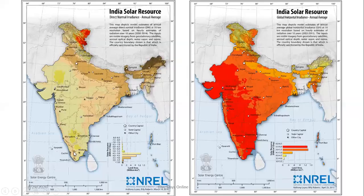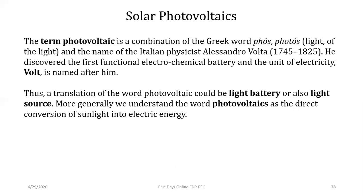India is in the tropical region and has abundant solar energy resources. We can tap solar energy both in the form of light and heat, making both solar thermal and solar photovoltaic systems well suited for our country. I will give a brief introduction to solar photovoltaics here, since there is a dedicated lecture on solar PV in this FDP.